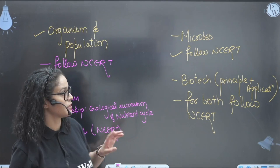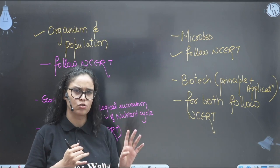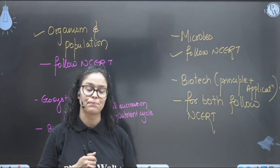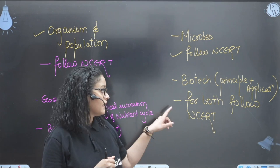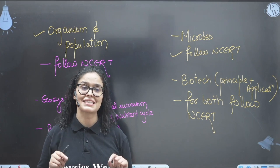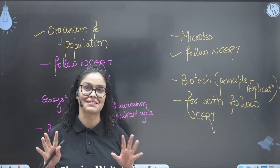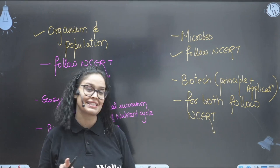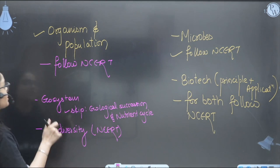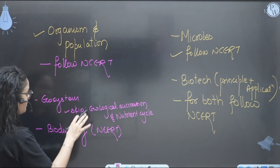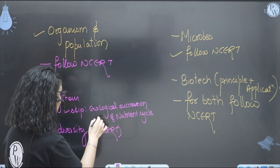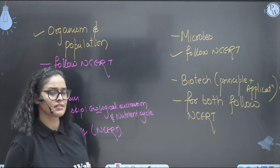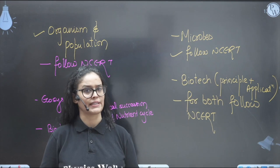For microbes, just follow NCERT - it's super easy. For biotechnology principles and applications, both chapters of this unit are super important because this time 10 questions alone came from these two small chapters. Follow NCERT for both. For organisms and population, follow NCERT. For ecosystem, do the full chapter of NCERT but skip ecological succession and nutrient cycle from the old NCERT. For biodiversity, follow NCERT.